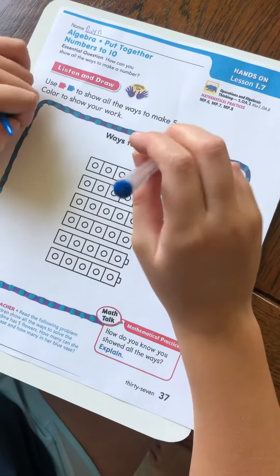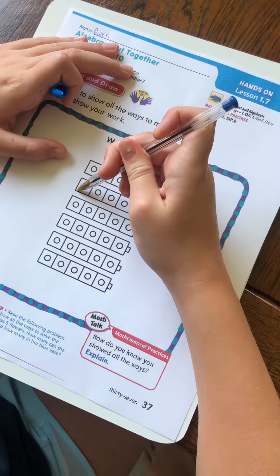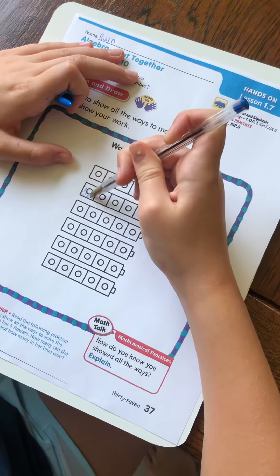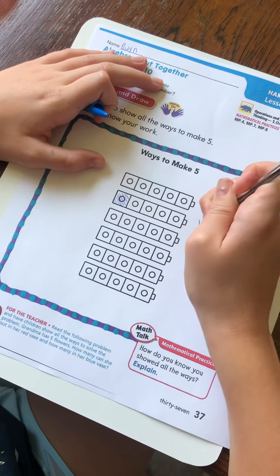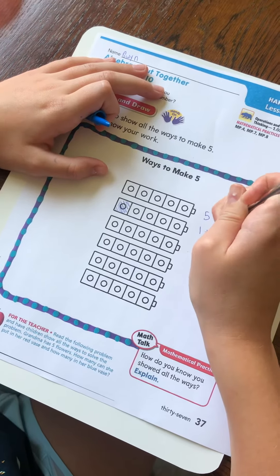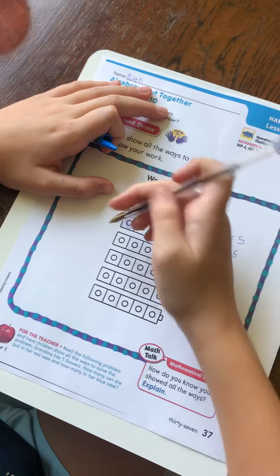Okay, let's see. This one I'm gonna do one block, which means 1 plus 4 equals 5.